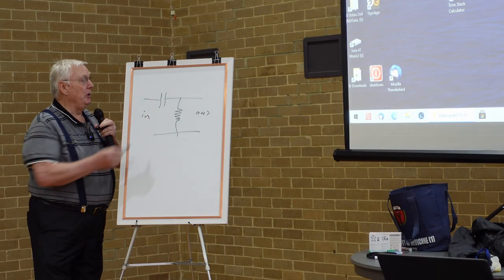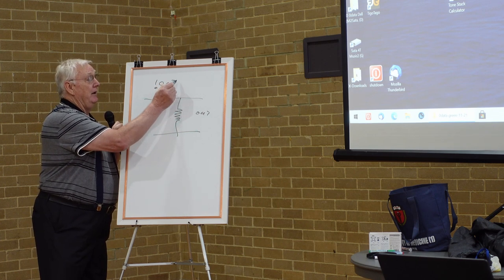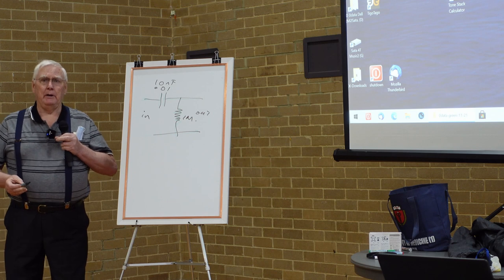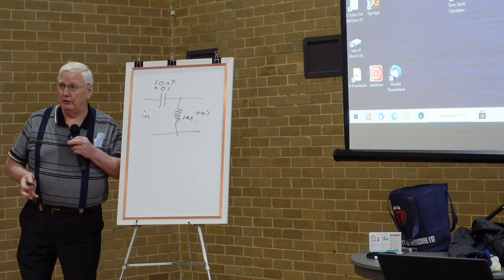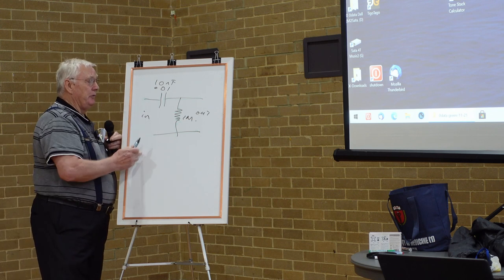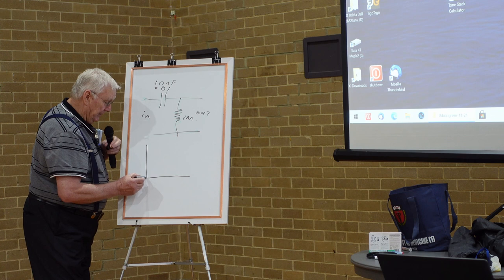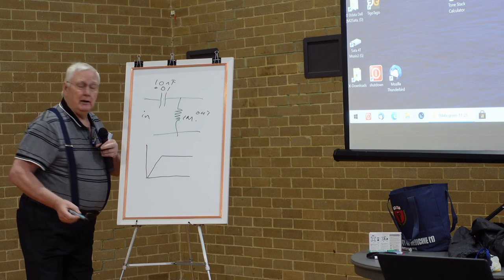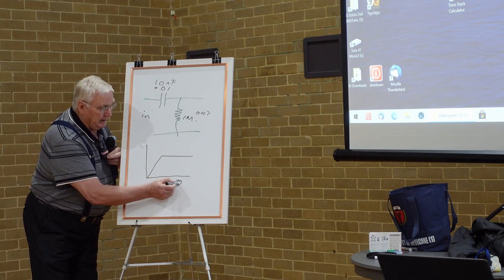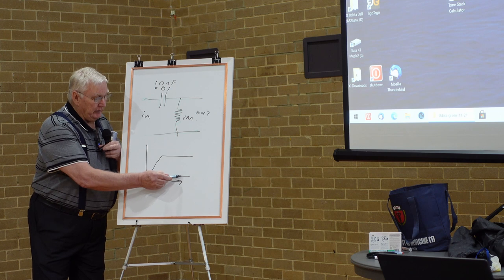That's the basis of a coupling network — a 0.01 capacitor, or 10 nanofarad, and normally about one meg. What you probably don't know is what its frequency response is like. It's very simple to calculate. If you do a sweep of frequencies in and look at the output, you get zero at DC, then it comes up and stays up. The frequency axis is logarithmic — 10 cycles, 100, 1,000, 10,000, 100,000, etc.